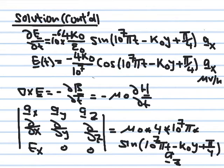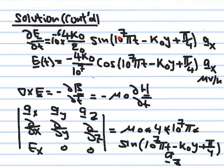We organize everything and arrive at the expression for the derivative of the electric field. The 10^-6 factor is already there. Next, we simply integrate relative to time: the integral of sine gives minus cosine, and because we are integrating with respect to time, we divide by 10^7 π.